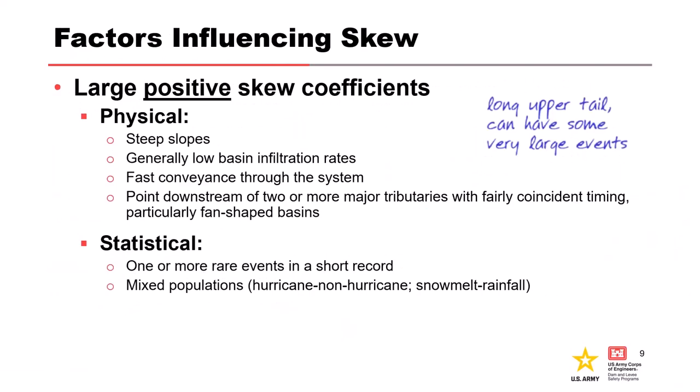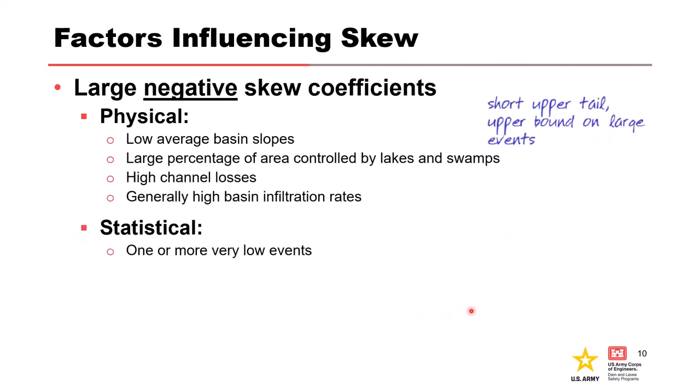Let's look at factors that can influence the skew value. Physical and statistical factors often result in large positive skew coefficients — these include steep slopes, low loss rates, fast conveyance, and coincident basin runoff timing. Statistical reasons include one or more rare events in a short record and mixed populations, for example things like hurricanes combined with snowmelt. Factors that might cause large negative skew coefficients are lower basin slopes, large areas of controlled runoff, high losses, along with very small events.